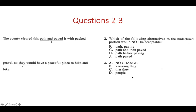Question 3: 'The county cleared this path and paved it with packed gravel so they would have a peaceful place to hike and bike.' This is an ambiguous pronoun — 'they' — we have no idea who 'they' are. So A, B, and C can't be right because we don't know who 'this' or 'they' refers to. You need to replace it with 'people' for clarity: '...so people would have a peaceful place to hike and bike.'